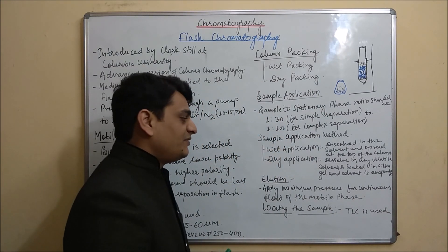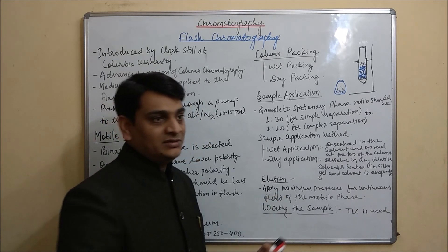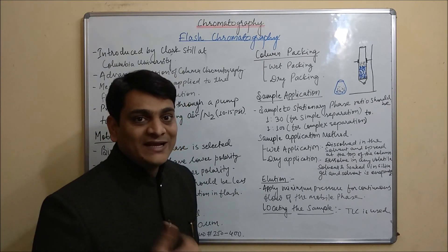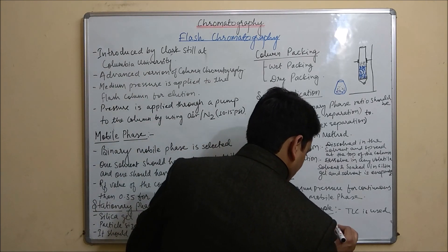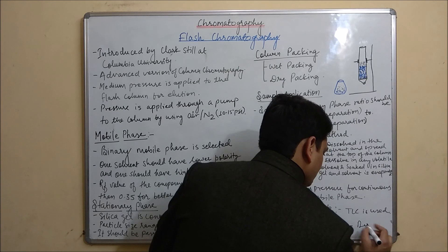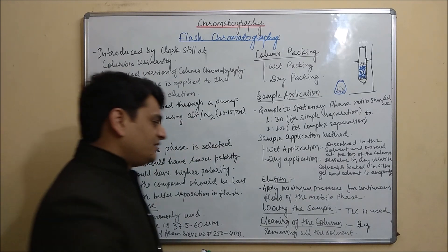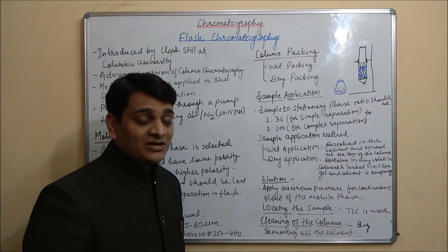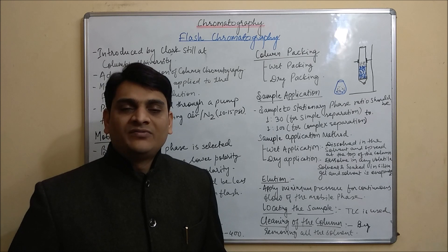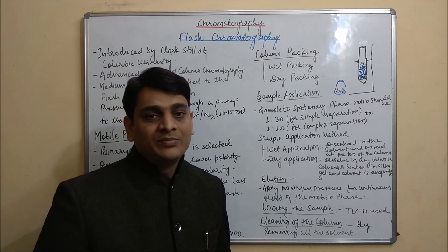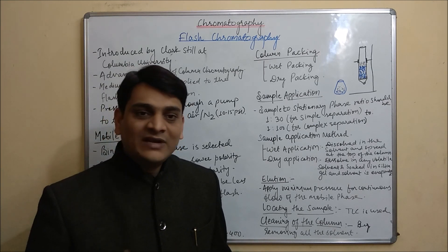For locating the sample in flash chromatography, the TLC method is used. The detail about locating the sample will be discussed in the next part of this video, which covers the methodology of flash chromatography. After locating the sample, cleaning of the column takes place: first we remove all the solvents present in the column, then we remove the silica gel from the column. Flash chromatography is based on the principle of adsorption chromatography. In the next part of this video, I will discuss the methodology of flash chromatography. Thank you.